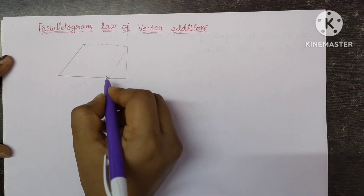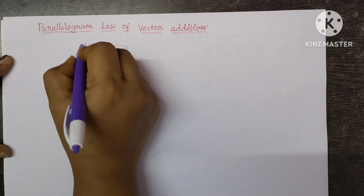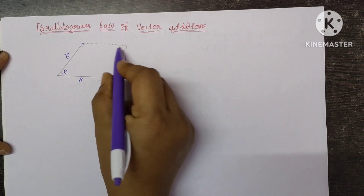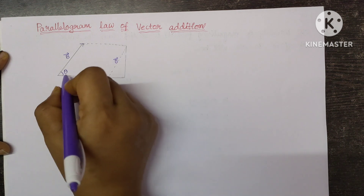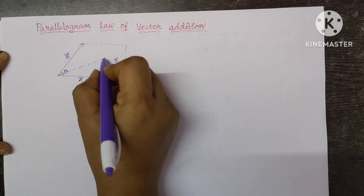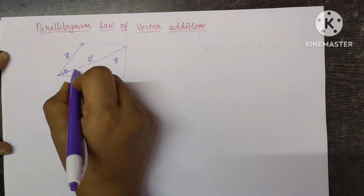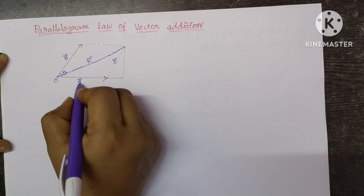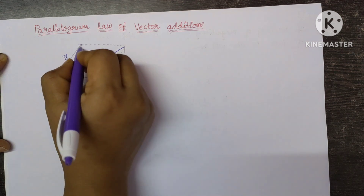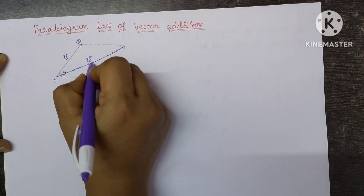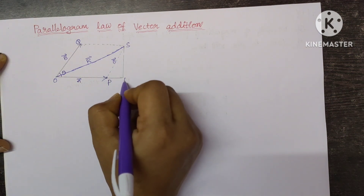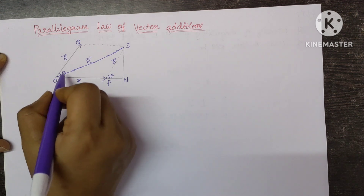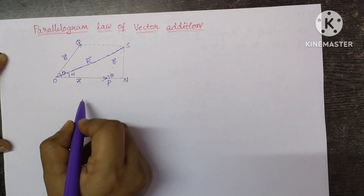Here I am considering two vectors — vector A and vector B — kept at an angle theta. We form a parallelogram, and the resultant vector is R bar. Let the points be O, E, P, Q, and S. Here SN is a normal drawn on OP. This angle is theta, and here also the angle is theta. Let alpha be the angle between the resultant vector and A bar.